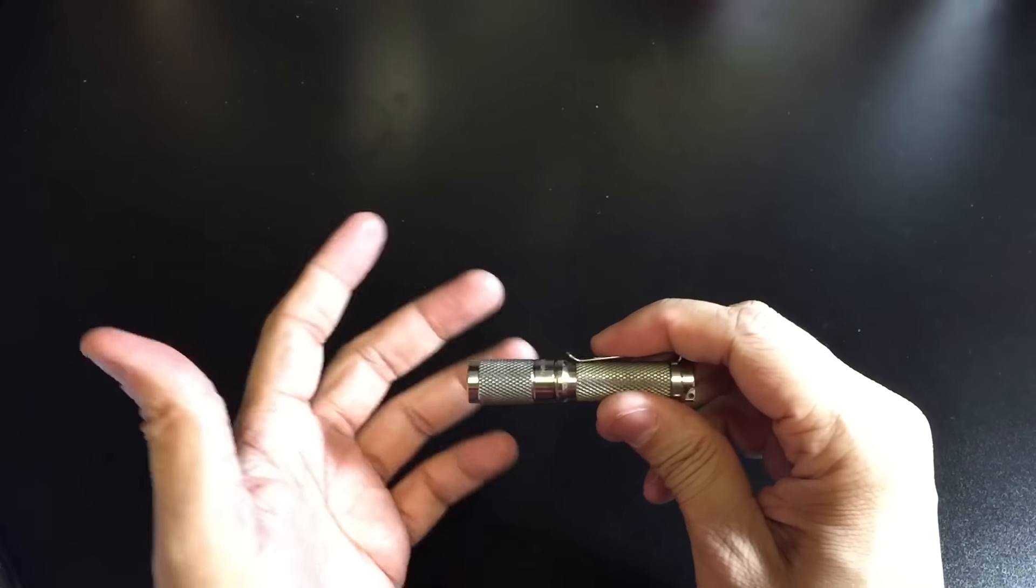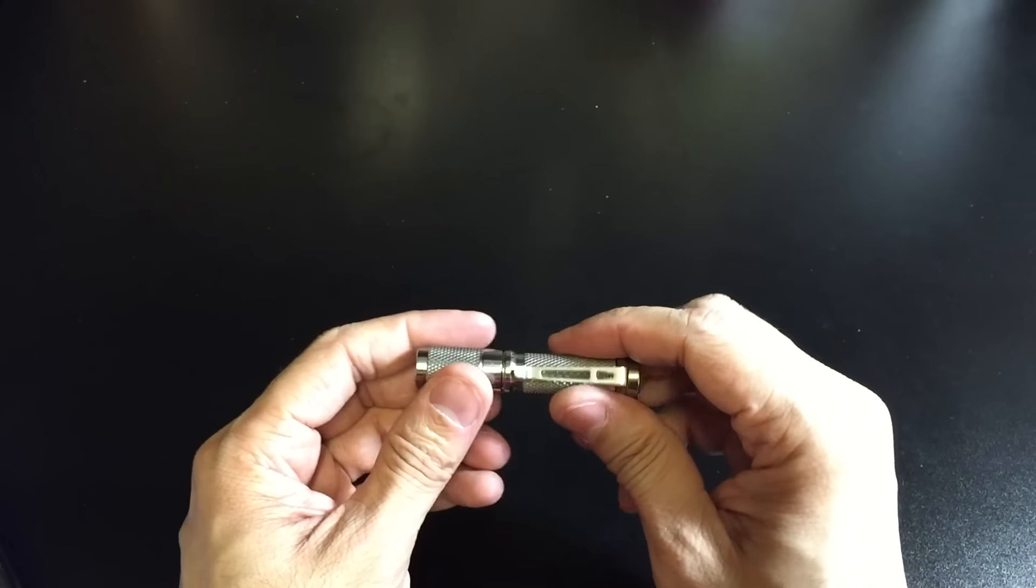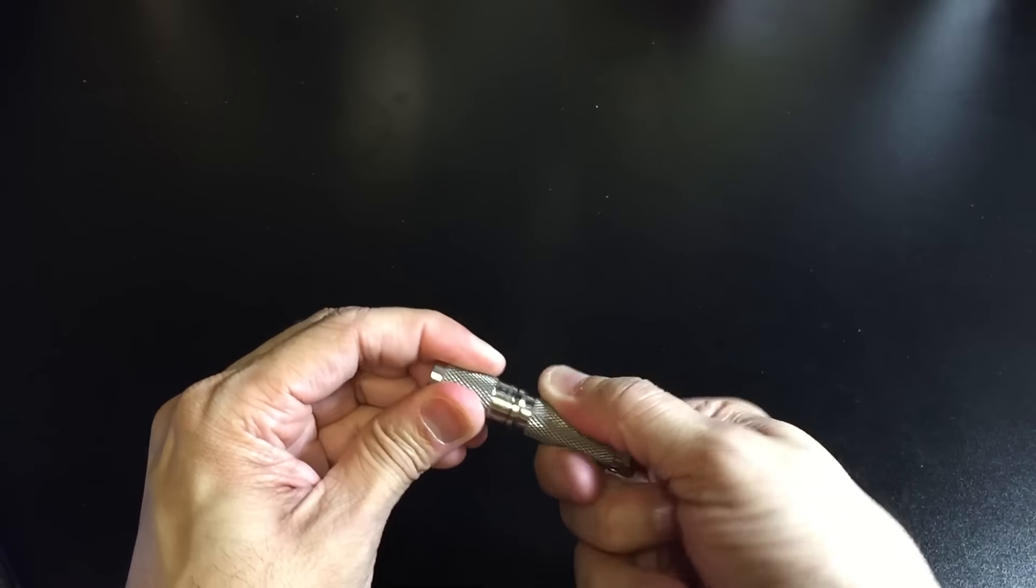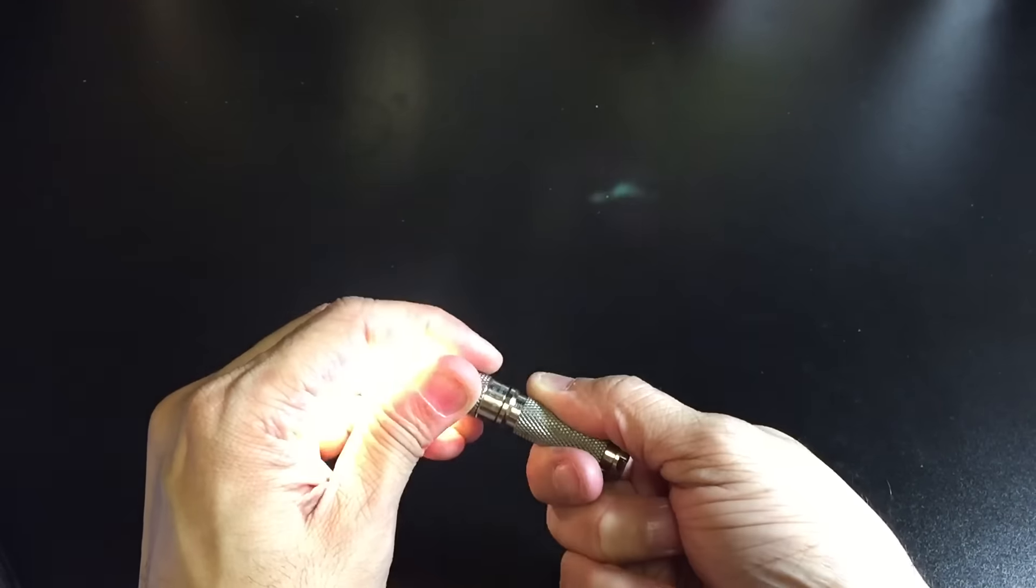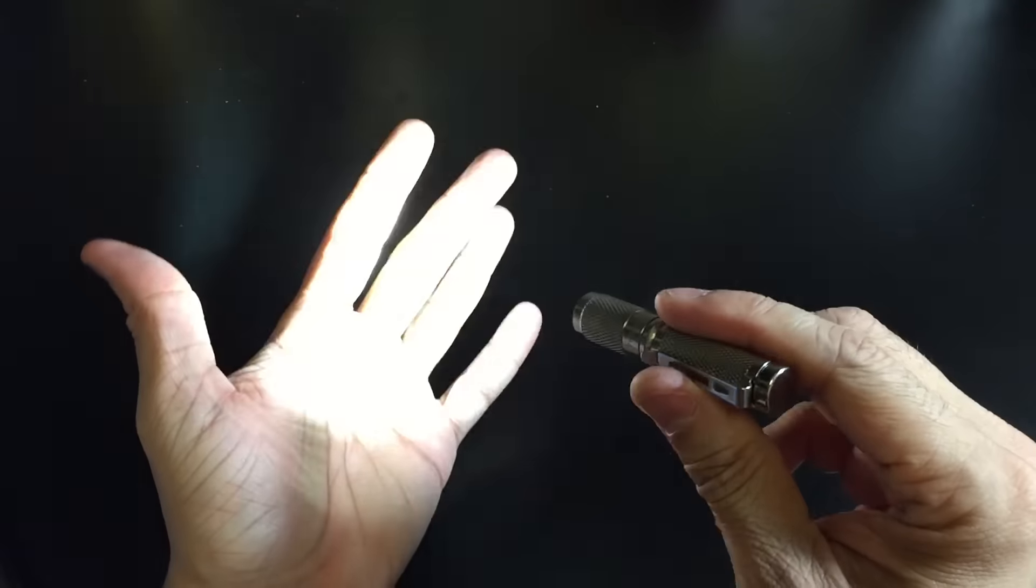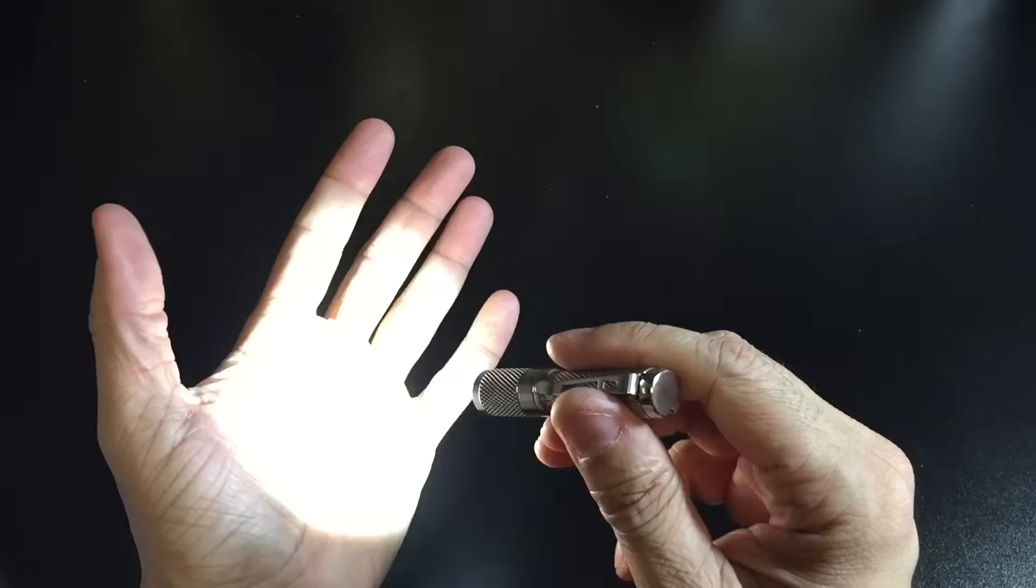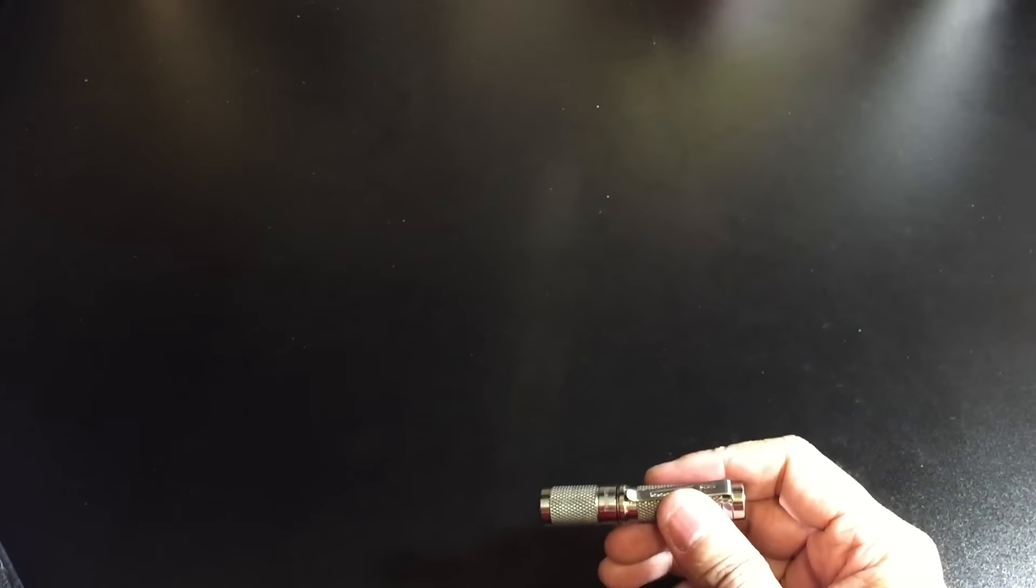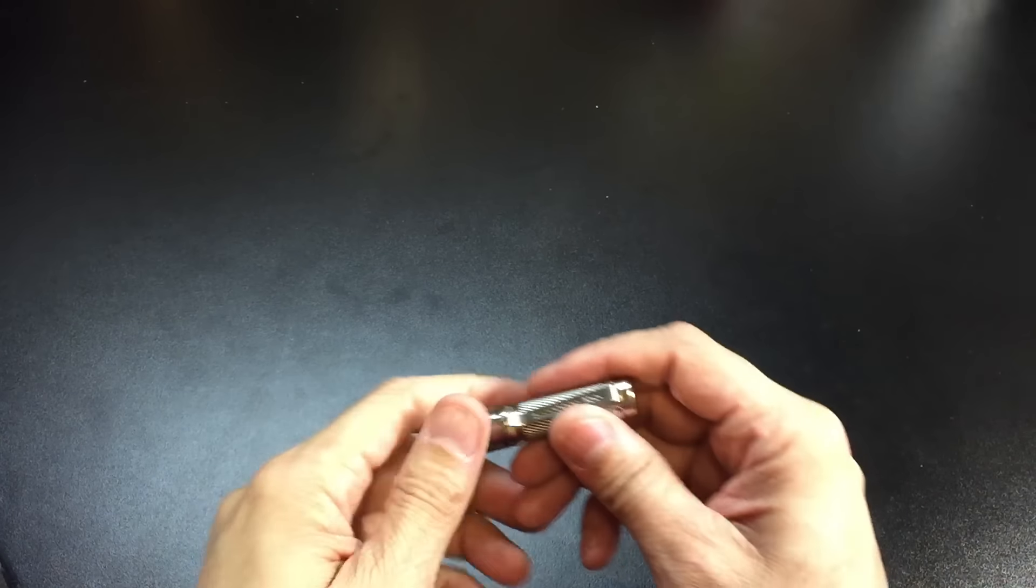Now, you do have one hidden mode, which is your strobe mode. And basically what you have to do is just cycle through the three modes twice. And then once you do that, you're going to be greeted with your strobe, which is 120 lumens for one hour. So there it is. Let me go ahead and turn on the overhead light again.